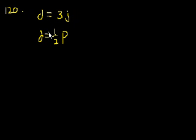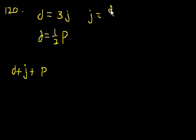How many books do the three of them have together in terms of d? So they want to know how much d plus j plus p is in terms of d. What's j in terms of d? j is equal to d over 3. And what's p in terms of d? If we multiply both sides by 2, you get p is equal to 2d.